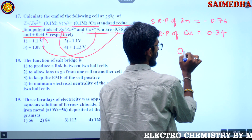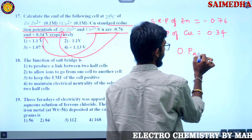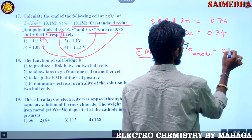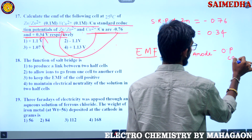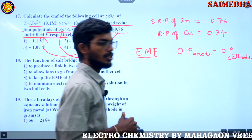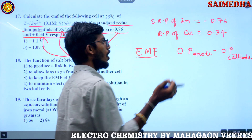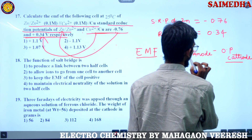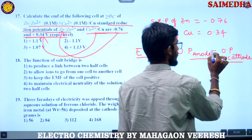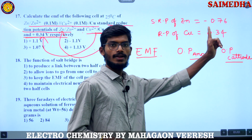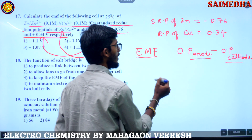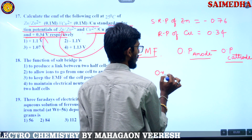The formula is: oxidation potential of anode minus oxidation potential of cathode. Now, since he has given us reduction potentials, we need to convert them to find the oxidation potential.